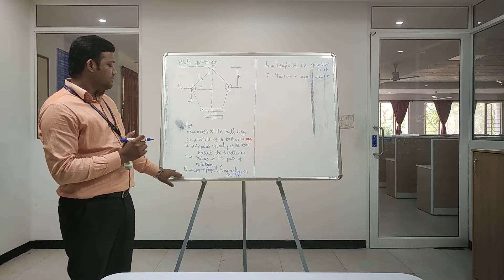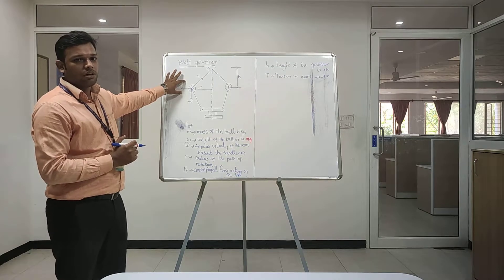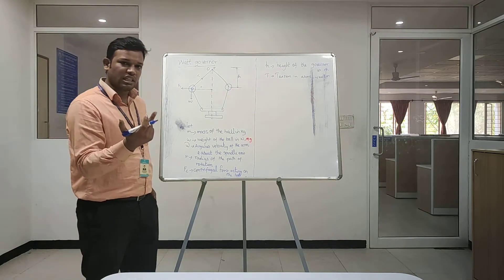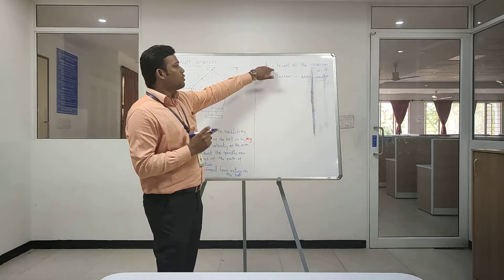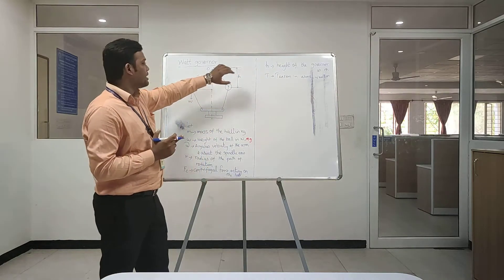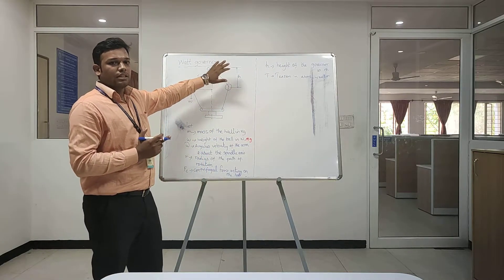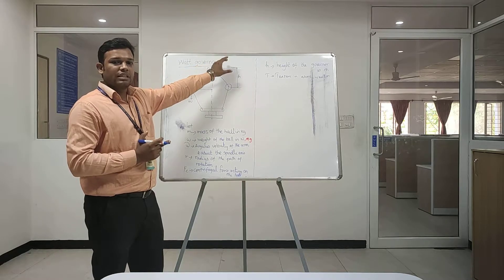Then Fc is centrifugal force acting over the ball. When the ball rotates, it will create a centrifugal force. Then H component will be the height of the governor. As I explained earlier, the height of the governor will increase or decrease.